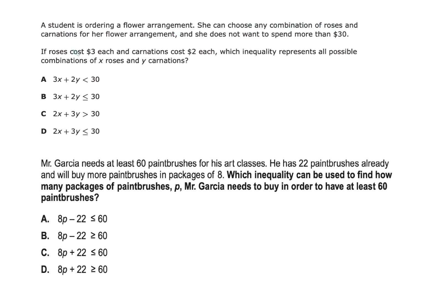A student is ordering a flower arrangement. She can choose any combination of roses and carnations and does not want to spend more than $30. Roses cost $3 each and carnations cost $2 each. Which inequality represents all possible combinations of X roses and Y carnations? X is paired with 3, and Y is paired with 2. She does not want to spend more than $30, meaning no more than $30, which indicates less than or equals to. Eliminating A and C for having greater than, and checking that X is paired with 3, the answer is B.